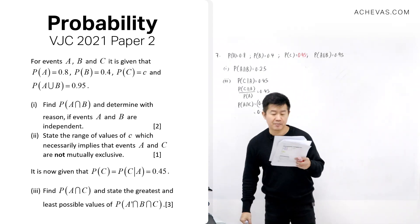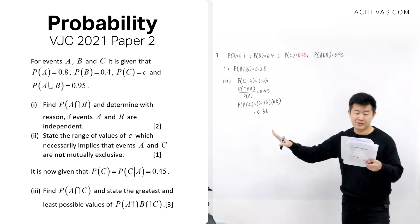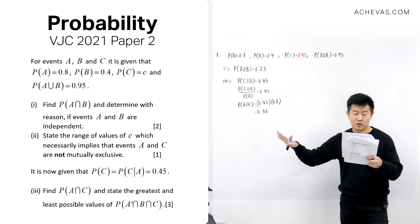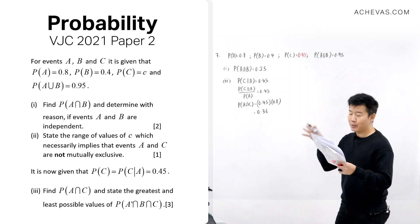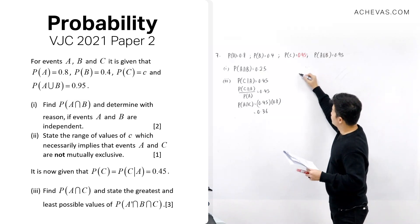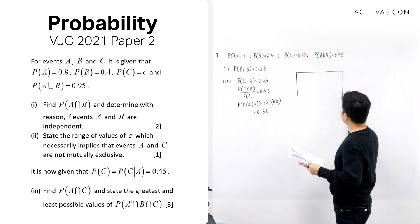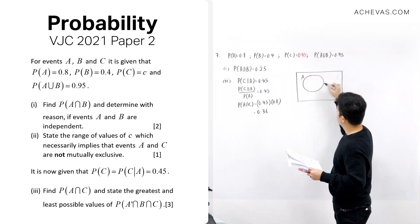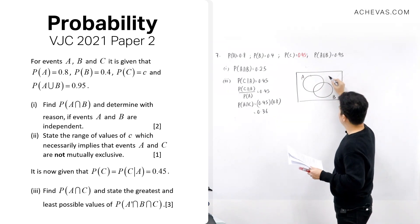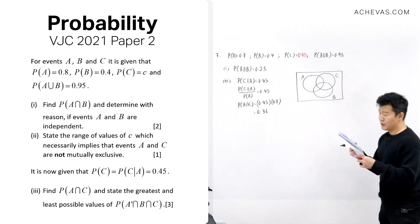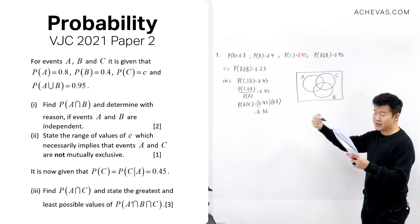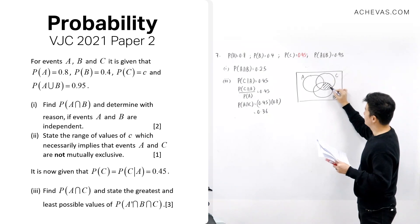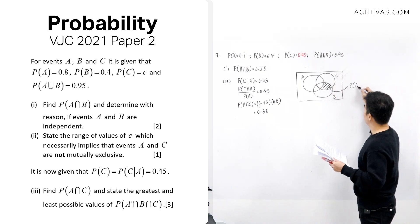Now we want to find the greatest and least possible values of P(A prime intersect B intersect C). On a Venn diagram, A prime intersect B intersect C is the region outside A, inside B, and inside C. We identify P(A intersect C) equals 0.36 as a fixed region, and then focus on the red region — P(A prime intersect C).